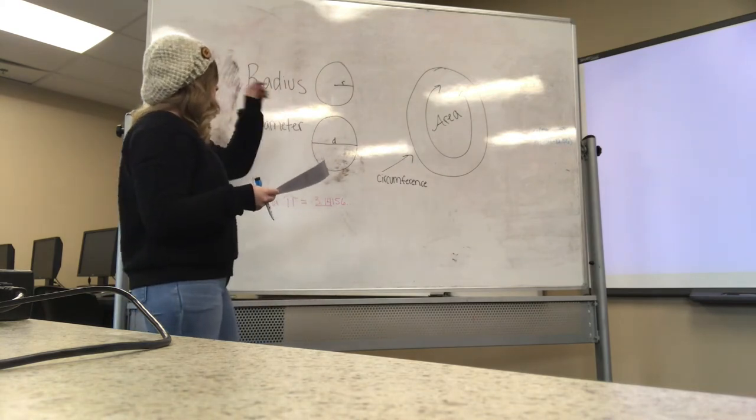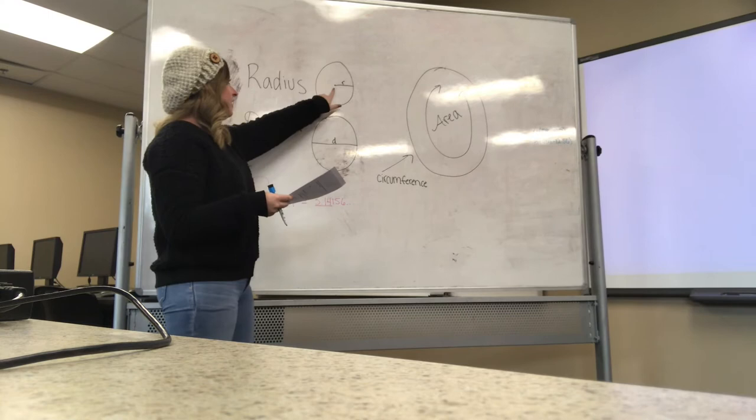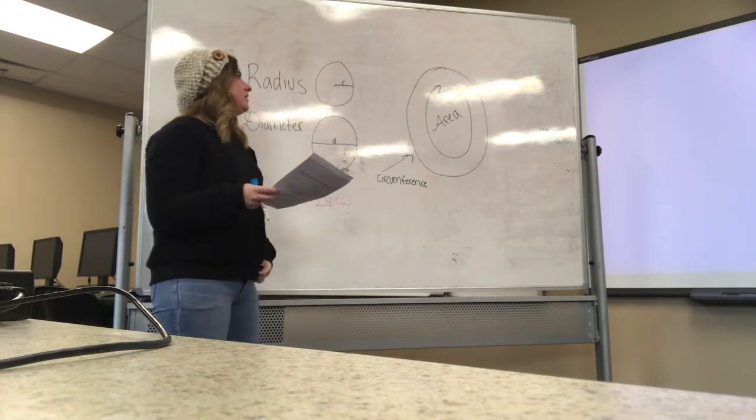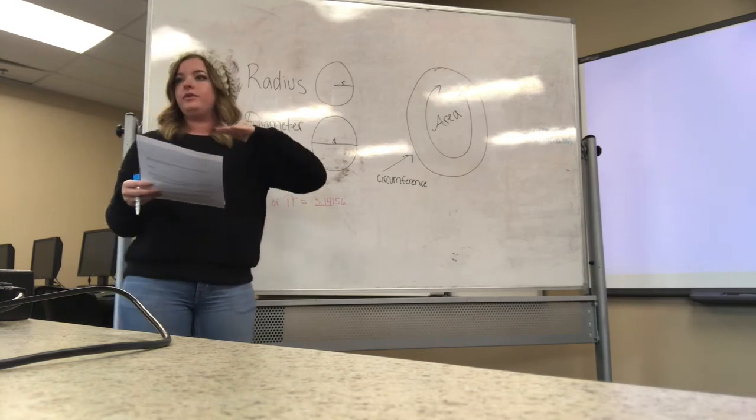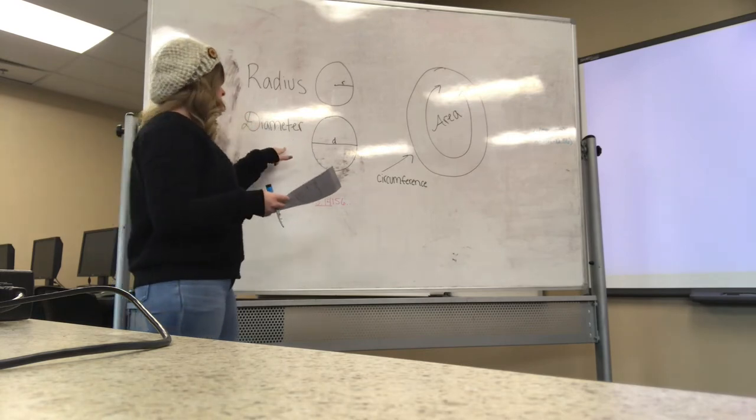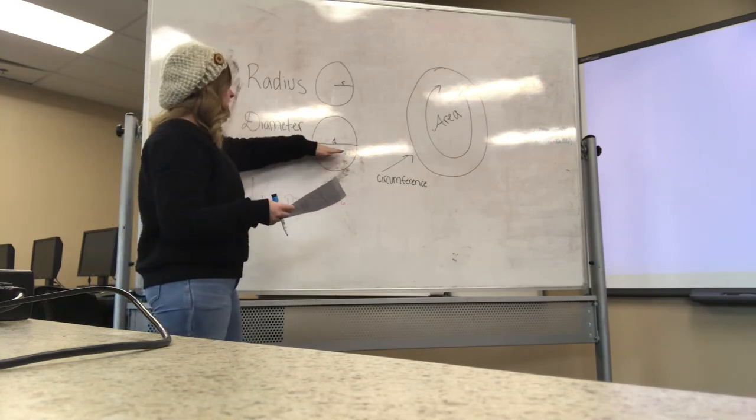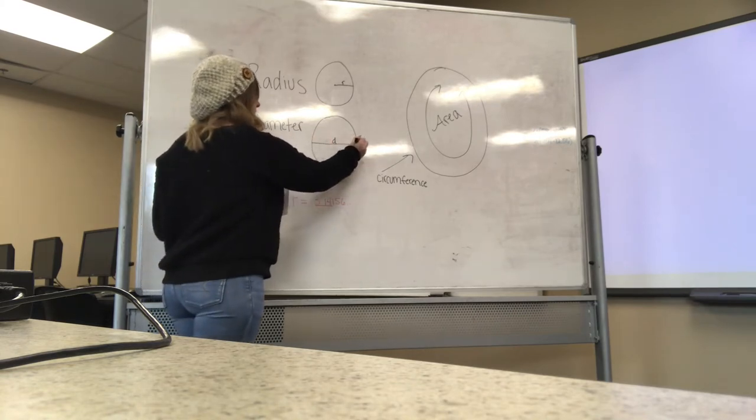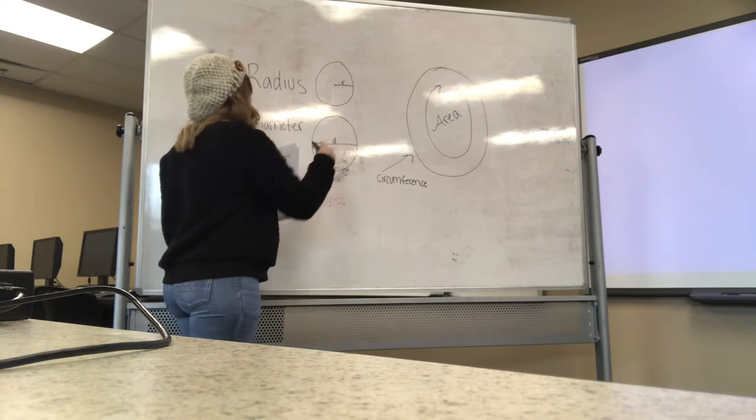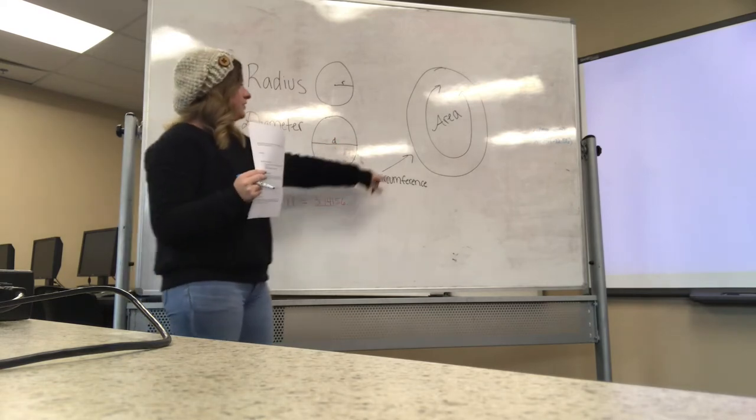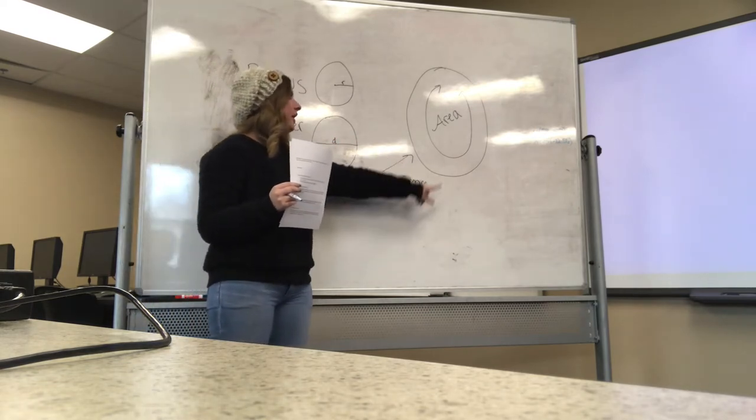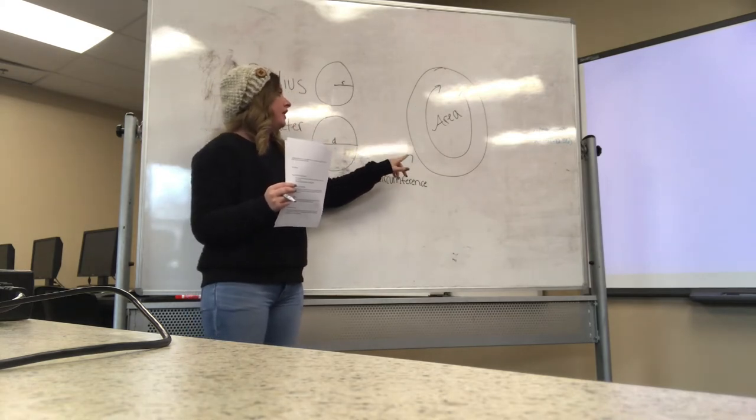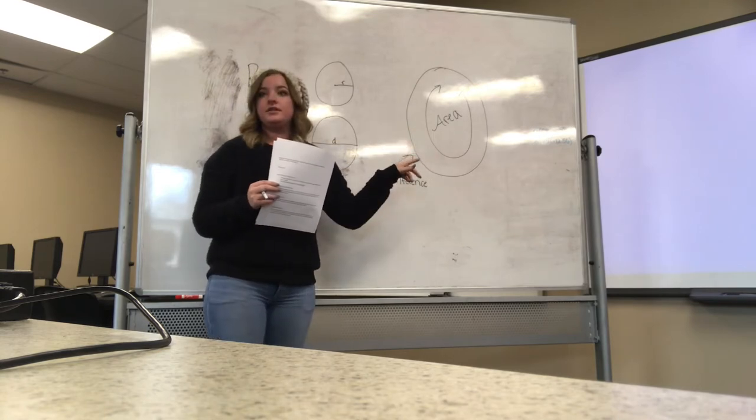We'll start with radius. Radius is where you start at the midpoint in the circle and go all the way to the end. So it's basically just a line that goes halfway through the circle. For the diameter, it is basically just a line that goes straight through the circle, from this endpoint to this endpoint, and that would be double the radius. For the circumference, it is the amount of space or mass around the circle, and the area of the circle would be the amount of space on the inside.